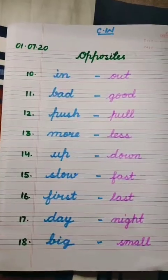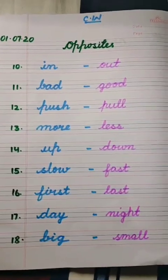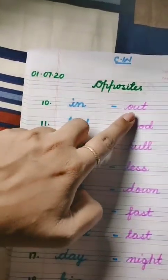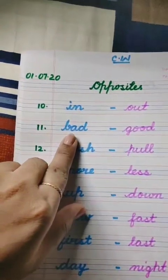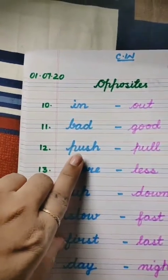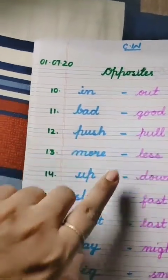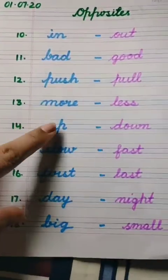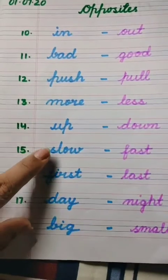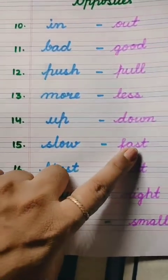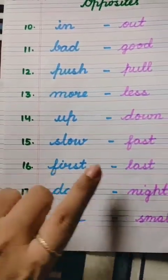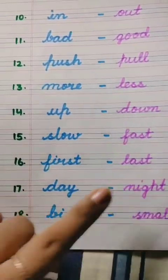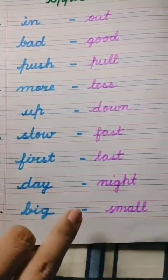Once again, let's review: opposite of in is out, opposite of bad is good, opposite of push is pull, opposite of more is less, opposite of up is down, opposite of slow is fast, opposite of first is last, opposite of day is night, and opposite of big is small.